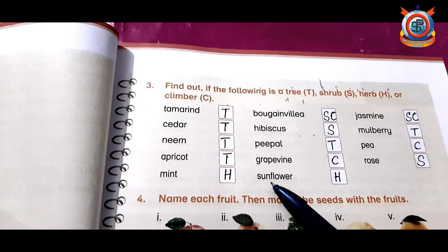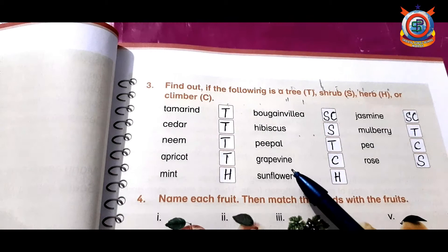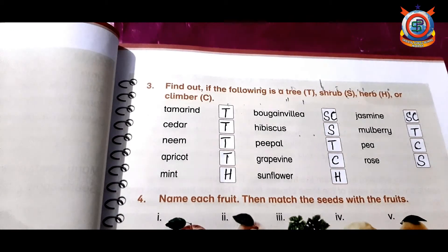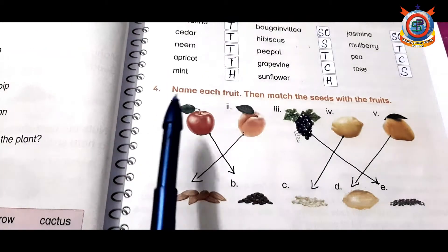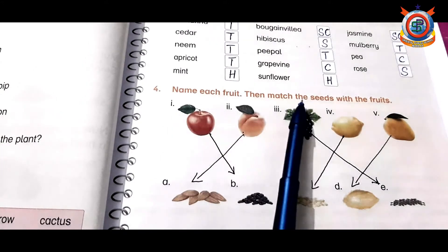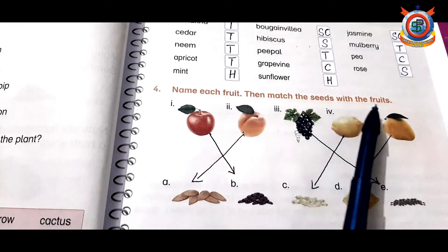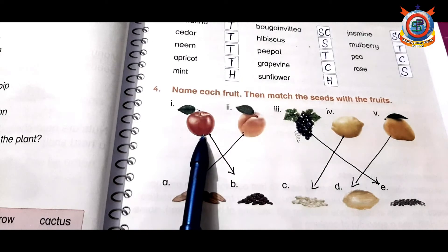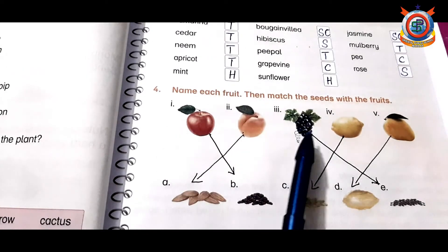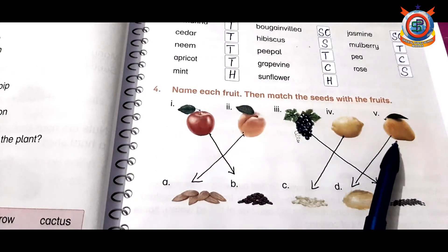Now question number four is: name each fruit, then match the seeds with the fruits. So it is an apple, apricot, grape, lemon, and mango.